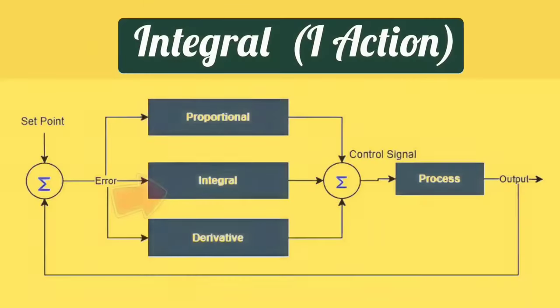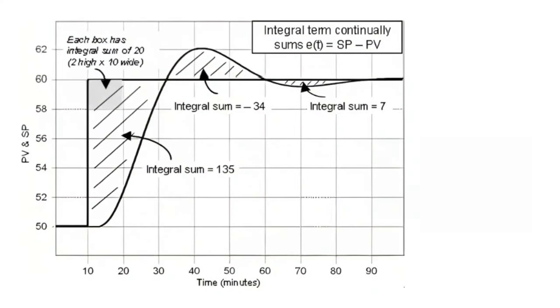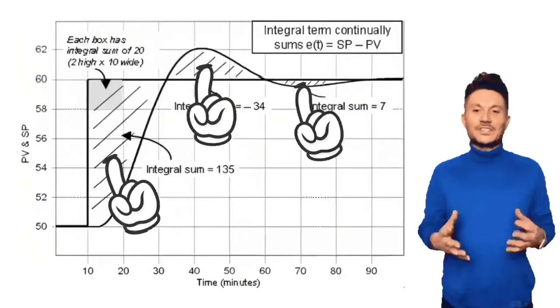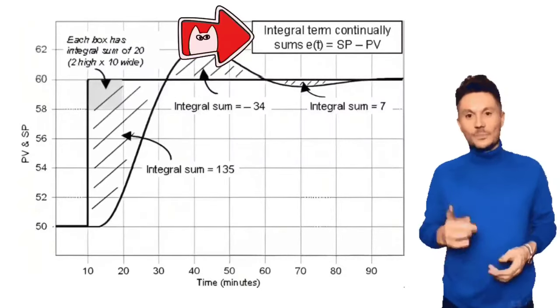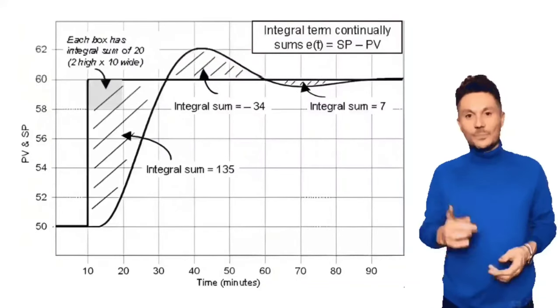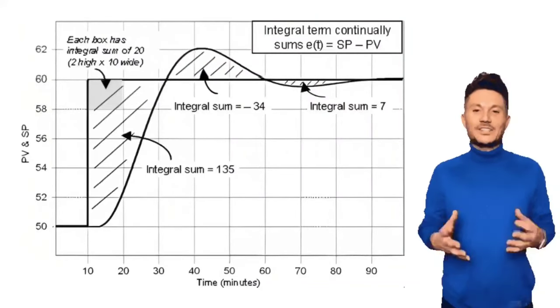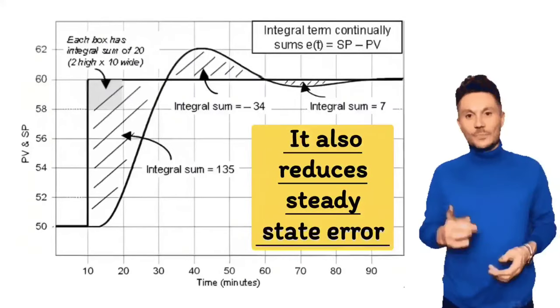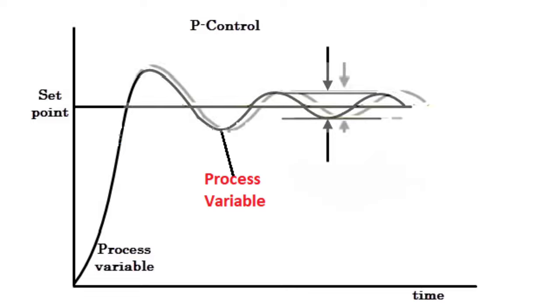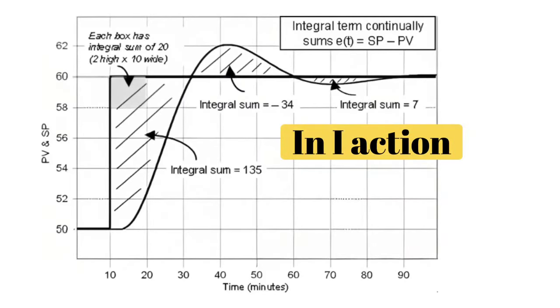Next is integral action, means I action. In integral action, we control the accumulated error. When the error persists, the integral action accumulates the error and adjusts the output. This also minimizes the steady state error. The steady state error which remained in P action is reduced in I action, or becomes zero.